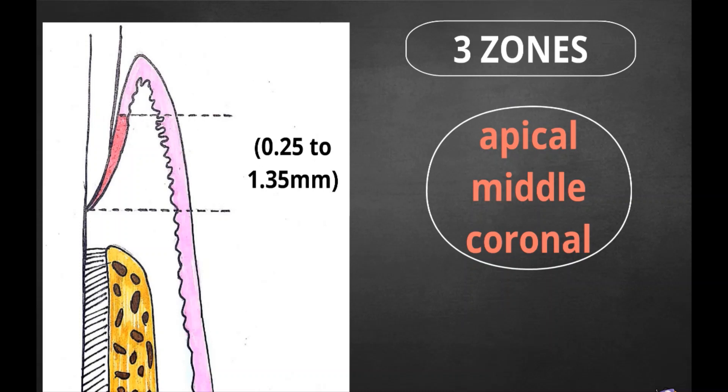Three zones have been described in the junctional epithelium: apical, middle, and coronal. The apical zone shows cells with germinative characteristics. The middle zone is of major adhesiveness and the coronal zone is one of greater permeability.